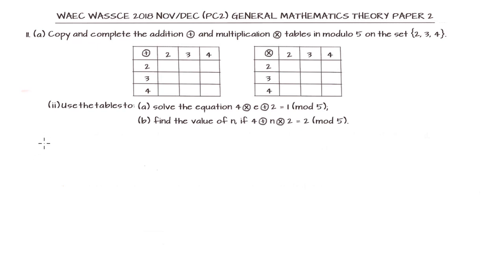In this question number 11, we are asked to complete the addition and multiplication table in modulo 5 on the set {2, 3, 4}.